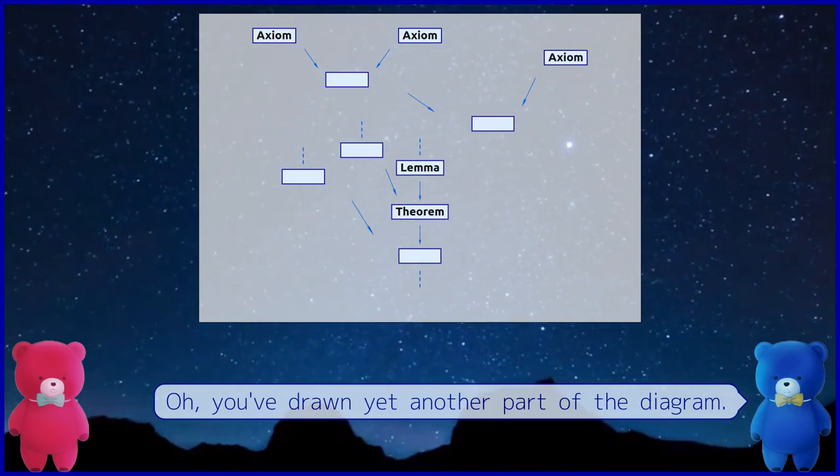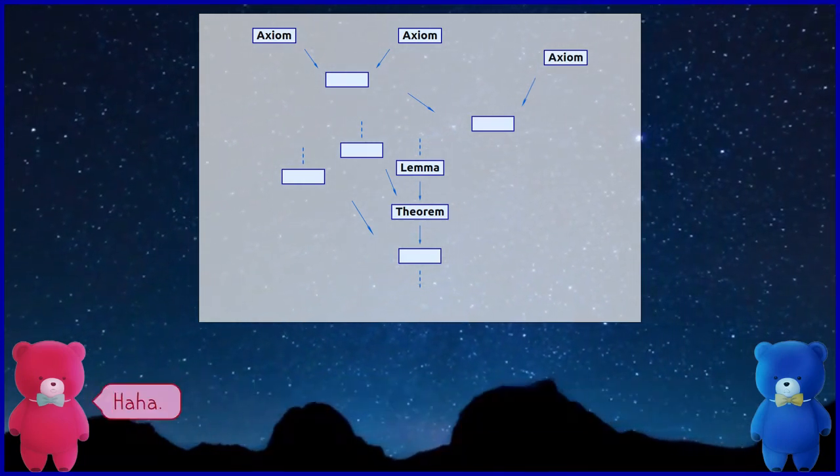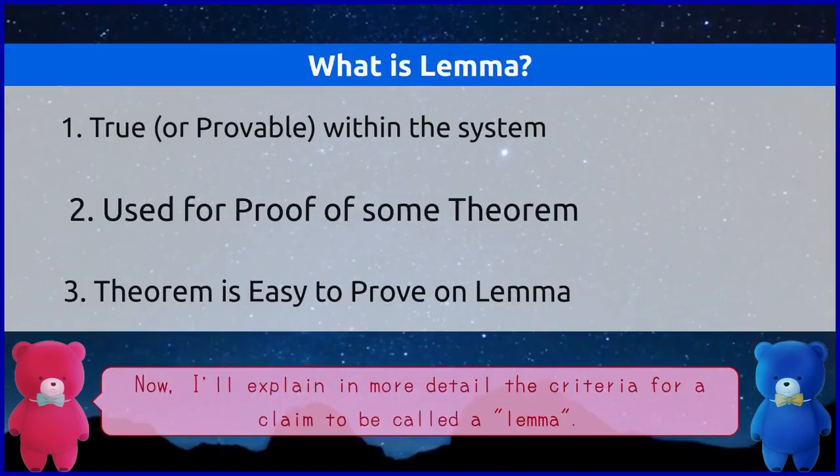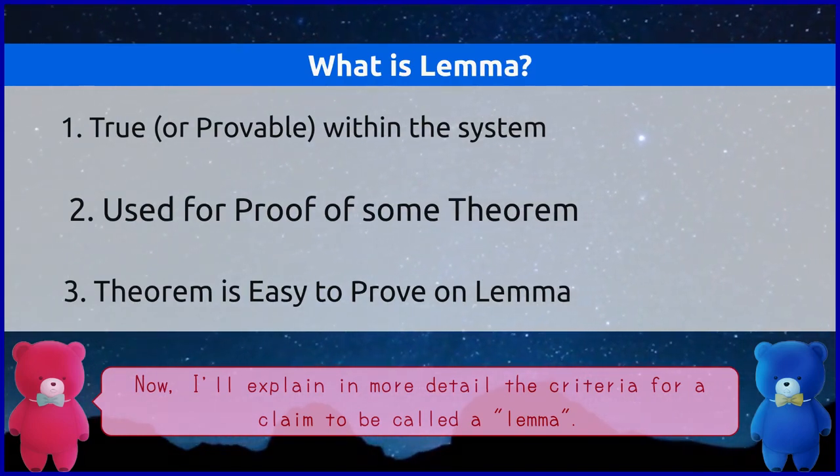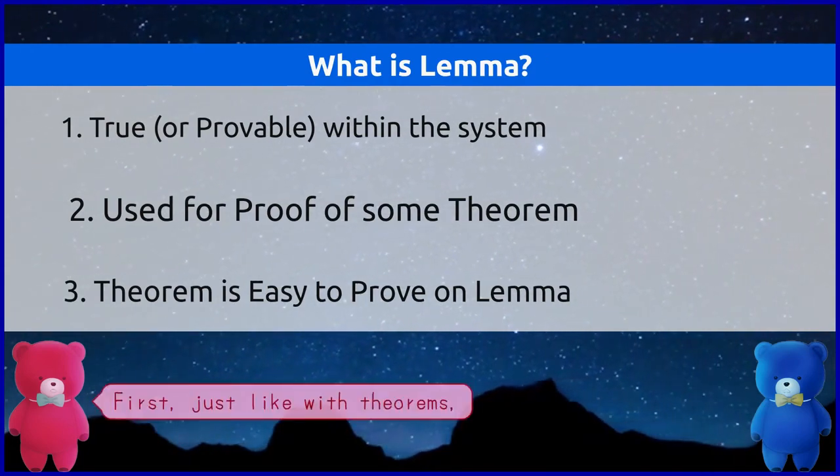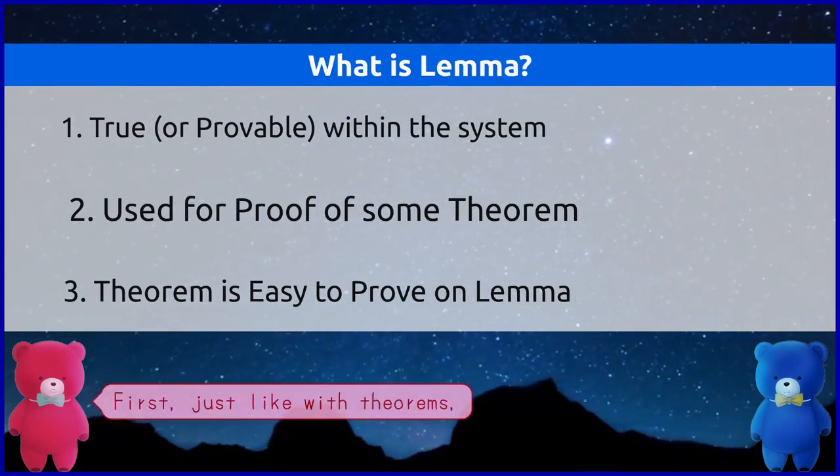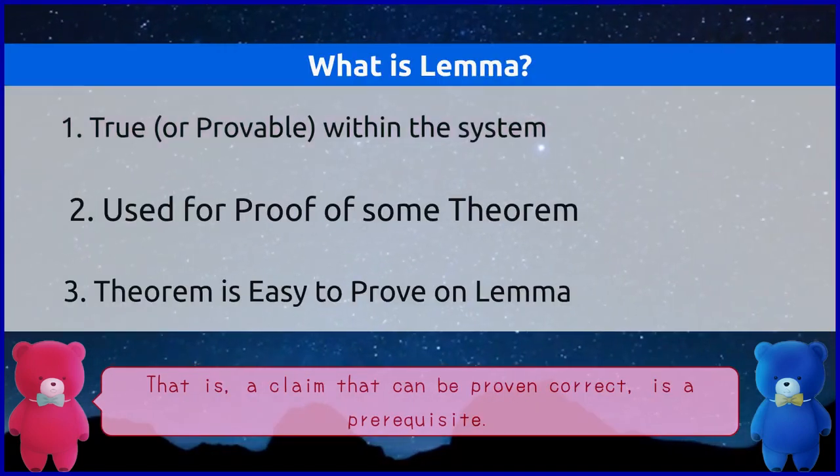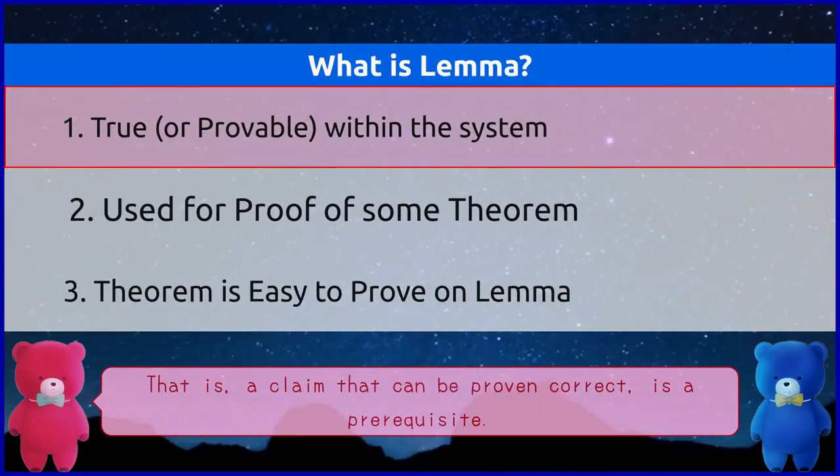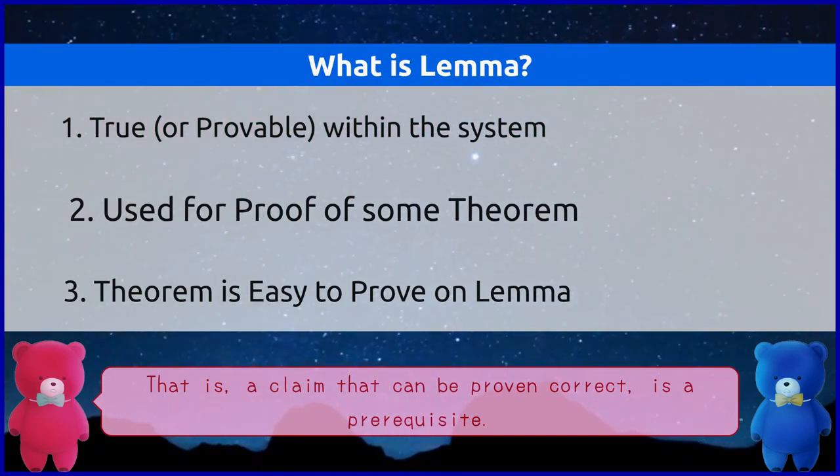Oh, you've drawn yet another part of the diagram. Now, I'll explain in more detail the criteria for a claim to be called a lemma. Yes. First, just like with theorems, the claim appearing in this diagram, that is, a claim that can be proven correct is a prerequisite. Makes sense.